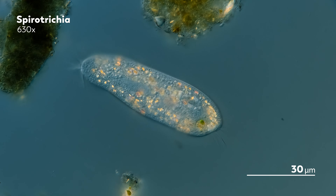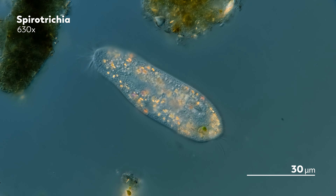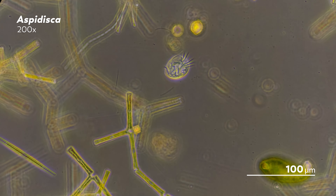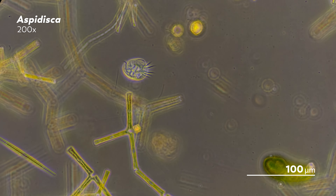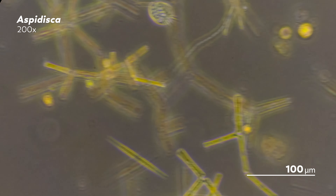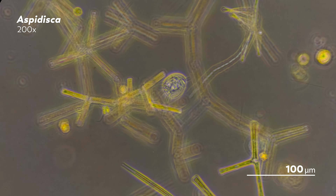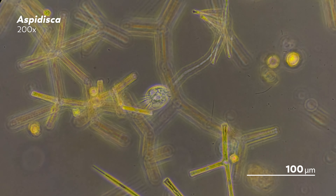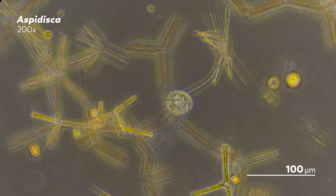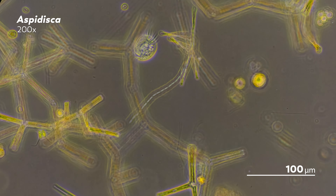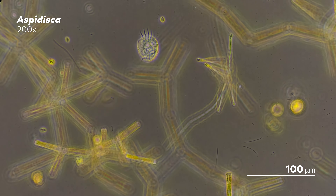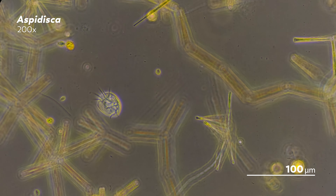It's thanks to these cirri that hypotrichs do something unusual for single-celled organisms: they walk. You can really see it with this Aspidisca, which looks like it's crawling across the screen like a little cartoon bug. These cirri help us know that we are looking at a hypotrichs ciliate, but to narrow down the genus or species, we need to be able to see all of the cirri so we can make out the patterns they form along the hypotrichs body. And it can be tough to see all those cirri, which is why we often cannot identify our hypotrichs.